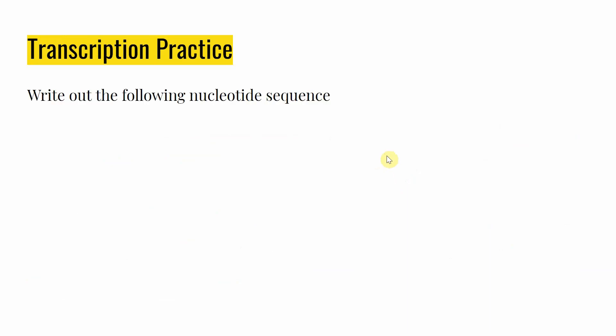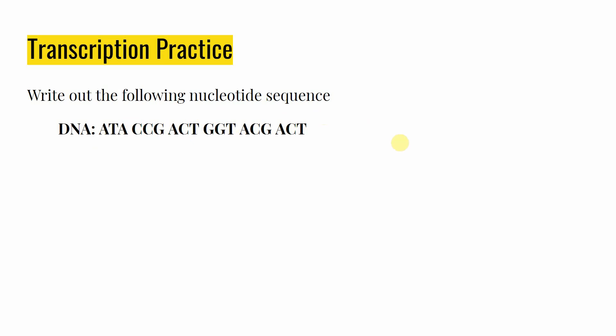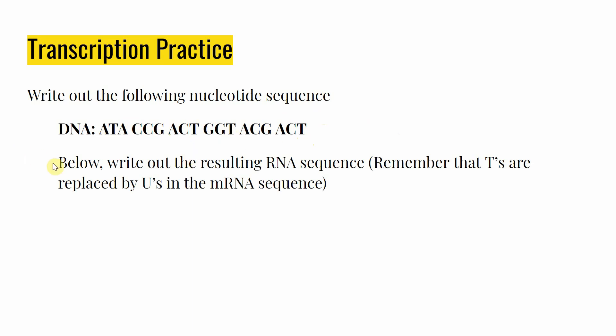Now we're going to do something very similar to what we did for DNA replication. But instead of playing the role of DNA polymerase, you are now going to try on the shoes of RNA polymerase. Write out the following nucleotide sequence, spacing the letters into groups of three — this will be really important once we get to DNA translation. Go ahead and write these out in your notebook and pause the video. Then below that DNA sequence, write out the resulting RNA sequence, remembering that when dealing with RNA, the T's are replaced with U's in the mRNA sequence.